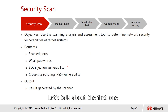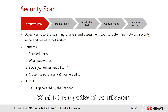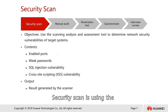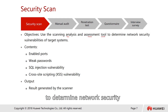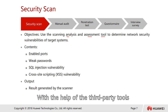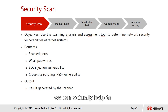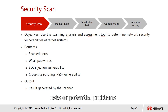Let's talk about the first one — security scan. The objective of security scan is to use scanning, analysis, and assessment tools to determine the network security vulnerabilities of a target system. With the help of third-party tools, we can pre-identify potential risks or problems.